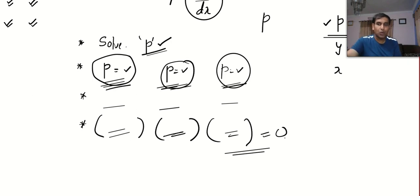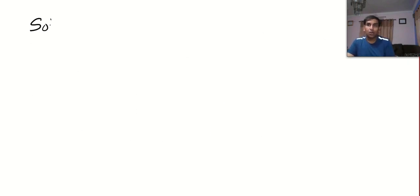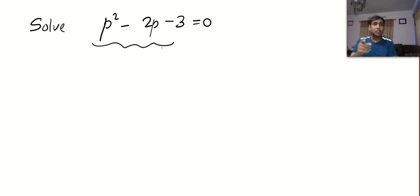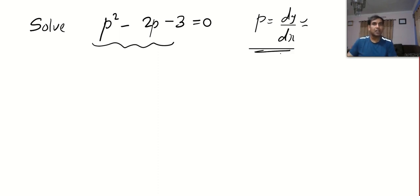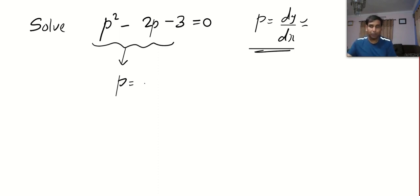Let us do one problem. Please write: solve P squared minus 2P minus 3 equal to 0. Can you see a differential equation given in P? Because P stands for dy by dx — it may or may not be specified in the question, but you are supposed to realize that P stands for dy by dx. By factorization or by using a calculator, you can solve for P. I found the values of P as minus 1 and 3 — so you got two values.